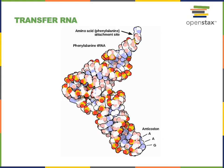Here we can see the structure of a transfer RNA, or tRNA, molecule. This tRNA is charged, meaning it has an amino acid bound. Amino acids are covalently bound at the amino acid attachment site of the tRNA. On the opposite end of the tRNA molecule is an anticodon, a three-nucleotide sequence that is complementary to the three-nucleotide codon sequence of a messenger RNA.